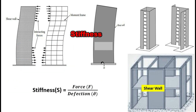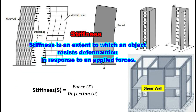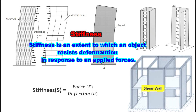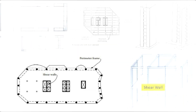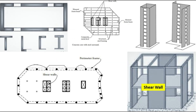What is stiffness? Stiffness is the extent to which an object resists deformation in response to an applied load. Stiffness is represented by S, which is given as force divided by deflection. This is why the shape of the shear wall section is very important.